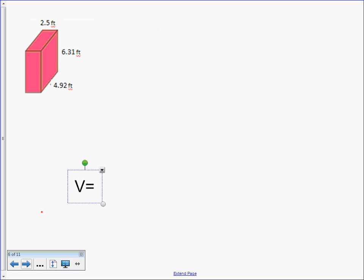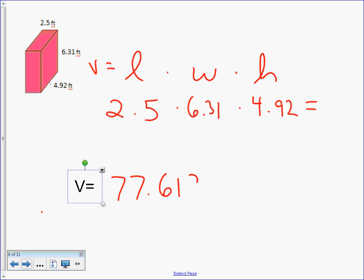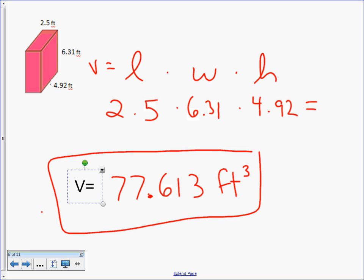Volume of a rectangular prism. A little harder because of the decimals, but it's just the three numbers multiplied together. Length, width, and height. Volume equals length times width times height. 2.5 times 6.31 times 4.92. As easy as just entering that in the calculator and pressing equals. Volume equals 77.613 feet cubed. Not squared. Cubed. It's volume.